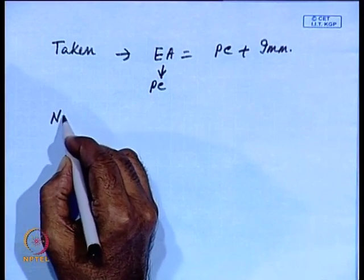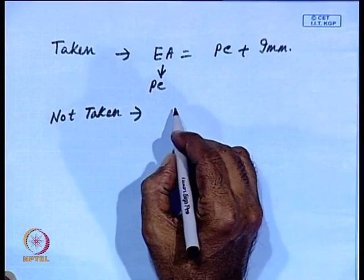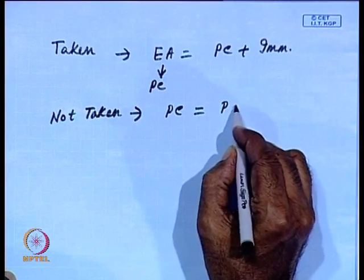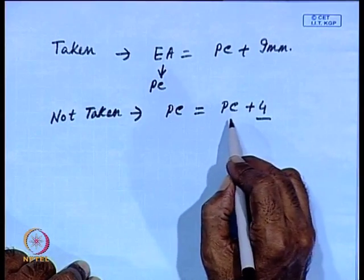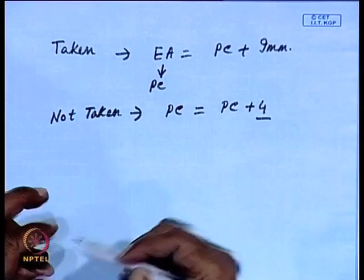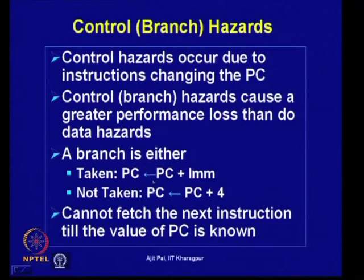The other possibility is not taken — the branch condition may not be satisfied. In such a case, the program counter holds the address of the next sequential instruction, which is PC plus 4, since instructions are 4 bytes. Until we know the new PC value — whether branch is taken or not — we cannot fetch the next instruction and start execution.